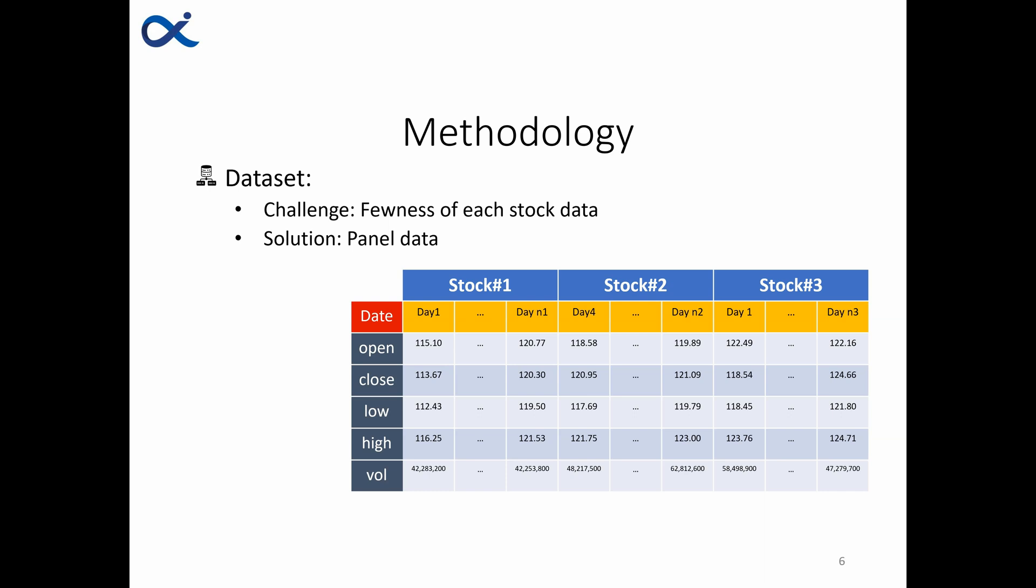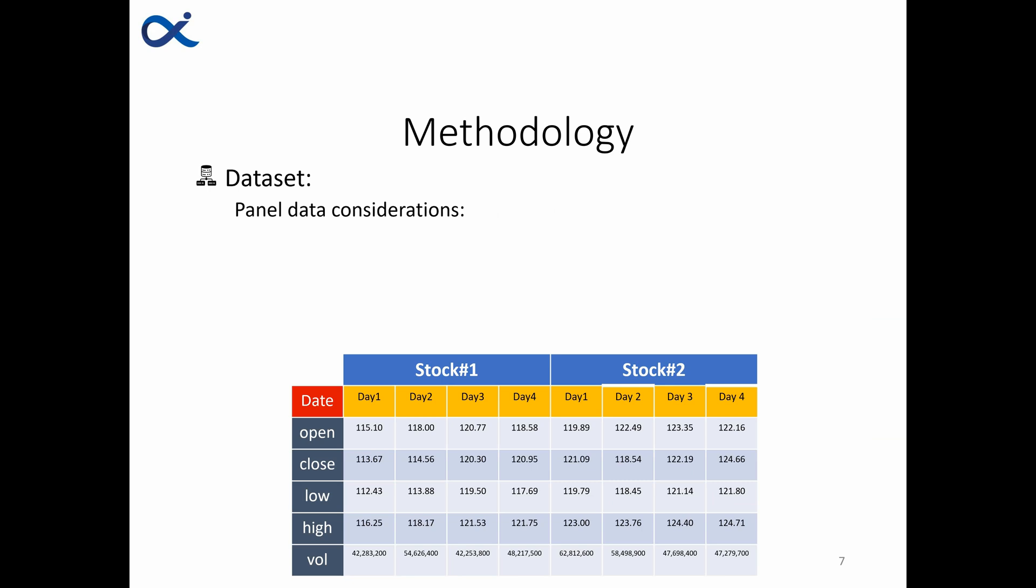In order to overcome this problem we call the solution of panelizing the data. By panelizing the data we were able to use other stocks' data in order to train our model. In this paper we are using last 40 days of each stock in order to predict next five days trend.